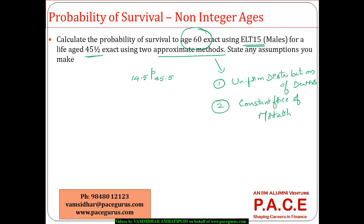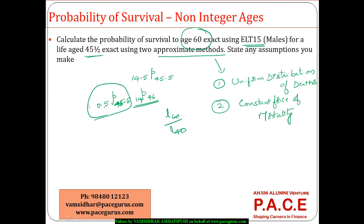We are interested only in that particular period because the expression gets translated into 0.5 p 45.5, which is the probability of survival to age 46, multiplied by 14 p 46. Now 14 p 46 can be obtained directly as l60 divided by l46, so that is straightforward. Only 0.5 p 45.5 requires either the UDD or the constant force of mortality assumption.